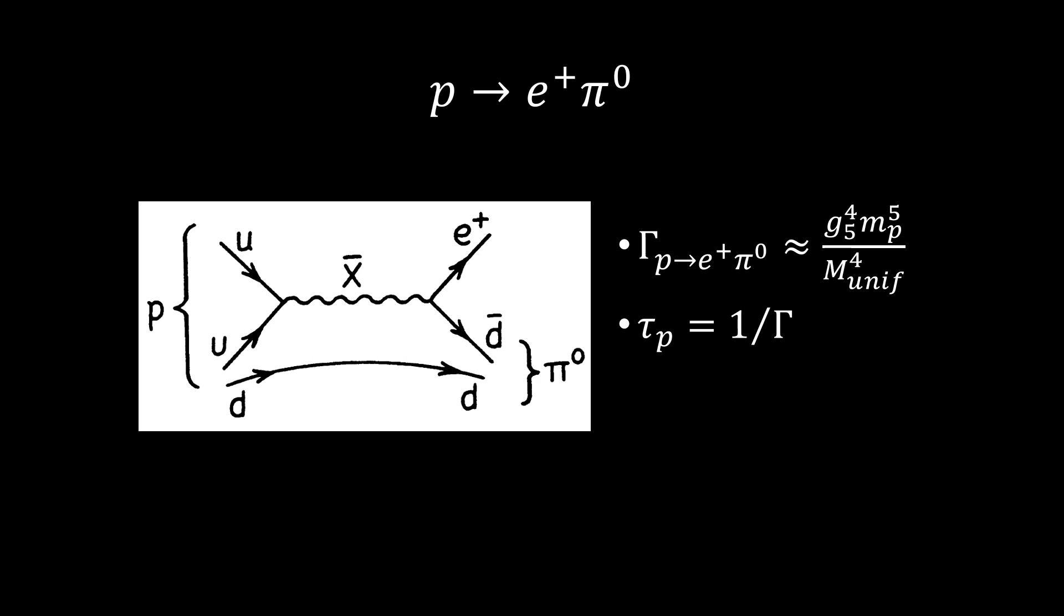The matrix element must have a factor g_5^2 / m_unif^2, so the width has a factor g_5^4 / m_unif^4. By dimensions, the width must be proportional to a mass, and the only mass that could be relevant is the proton mass, m_p.